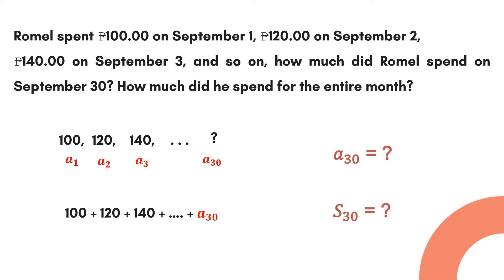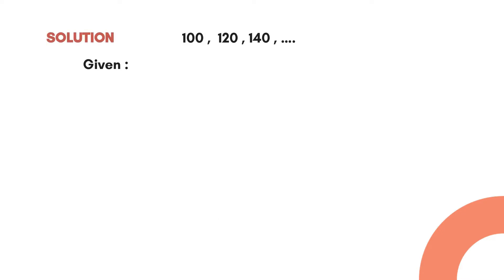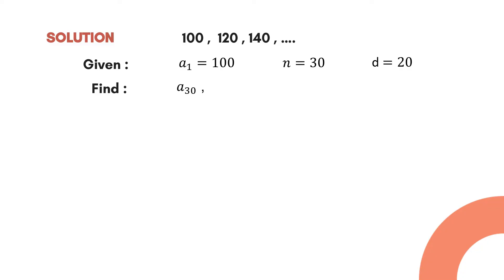Let's gather all the given values. We have a₁ = 100, n = 30 because we will be computing for Rumel's expenses on September 30, and the common difference d = 20. We need to find a₃₀ and S₃₀.